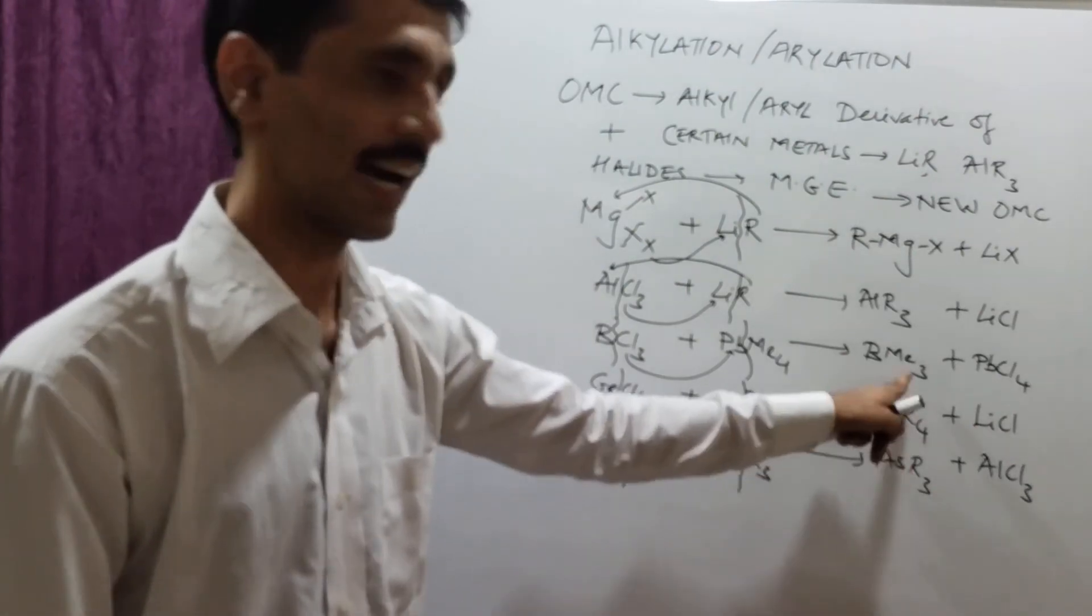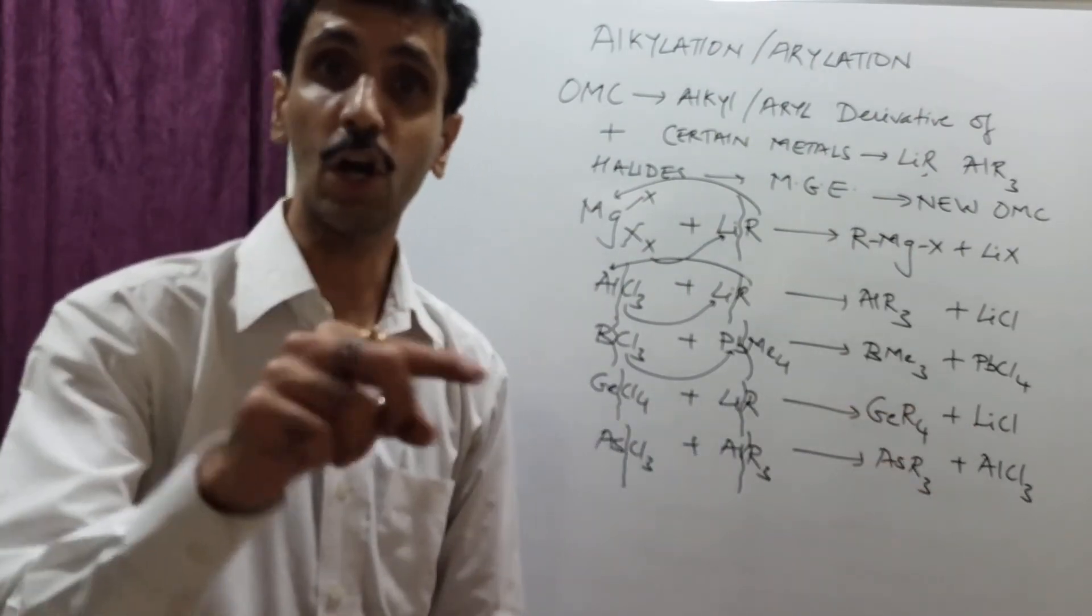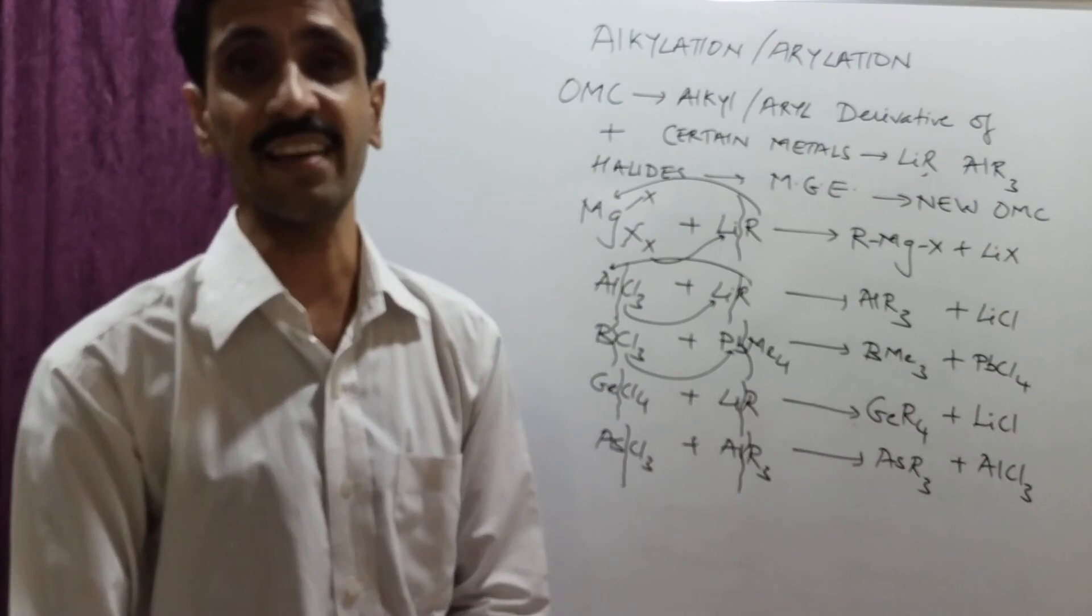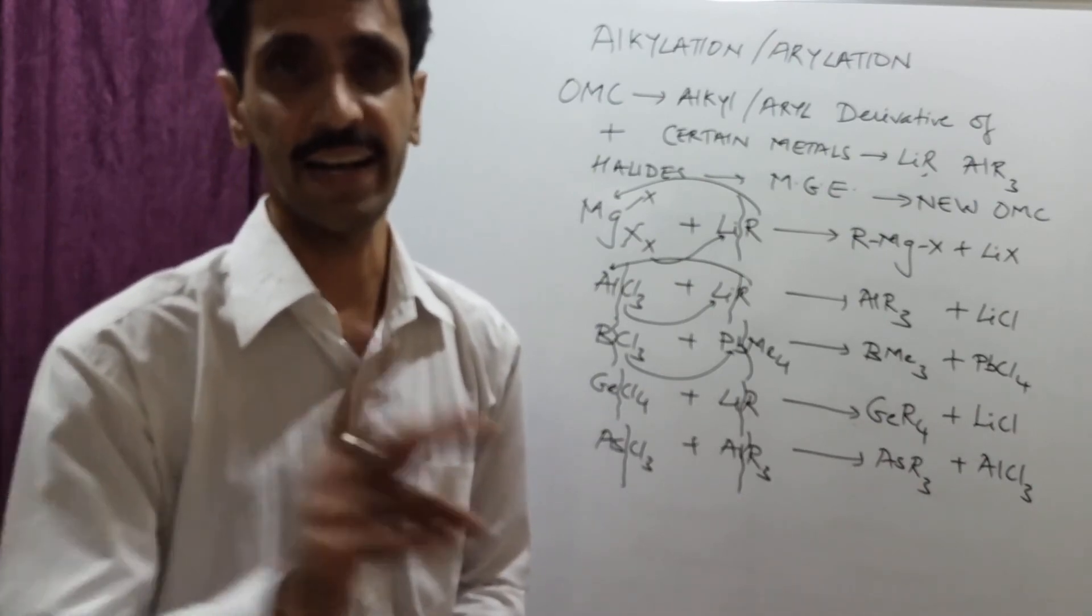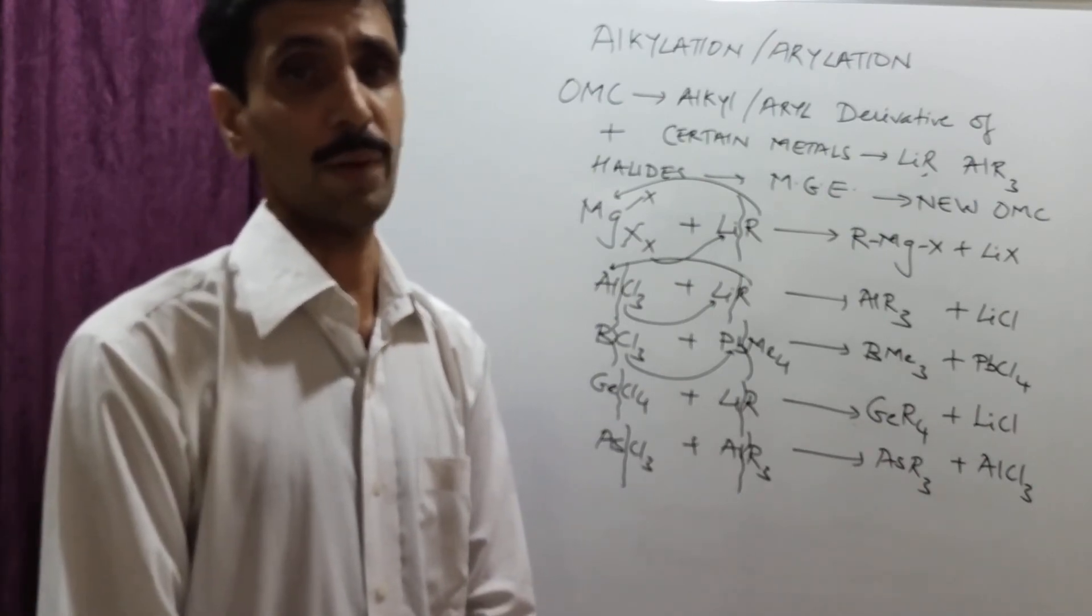Now, depending upon the R part, it can be either alkyl or aryl. And accordingly, we call this as alkylation or arylation. I hope you have understood up to this. Thank you very much. I'll see you.